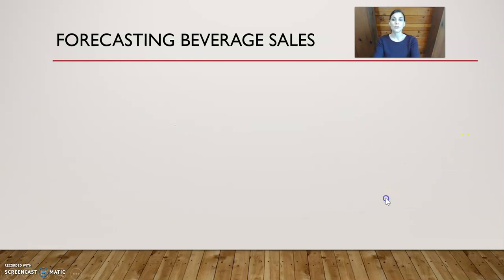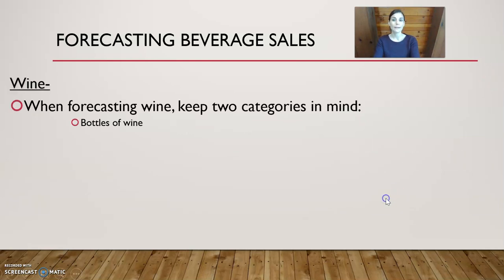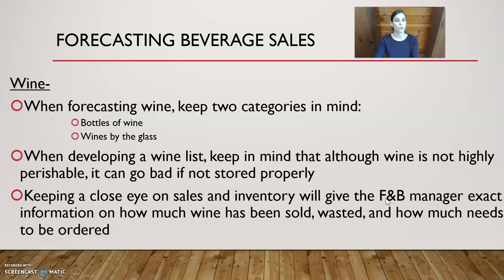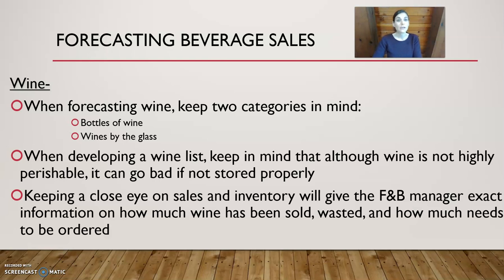When it comes to wine, how do we forecast and track it? Wine can be sold by the glass, by the bottle, by half a bottle, or by carafe, which is typically two and a half glasses. Setting the ways you'll sell these items and tracking them is the manager's responsibility.